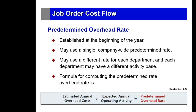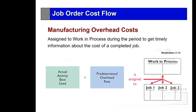The predetermined overhead rate is estimated at the beginning of the year for the whole company, though different departments can have different rates. The formula is: estimated annual overhead cost divided by estimated annual operating activity equals the predetermined overhead rate. This number is the combination of two estimates. Nevertheless, we apply it to the actual direct labor hours or costs recorded on each job cost sheet.